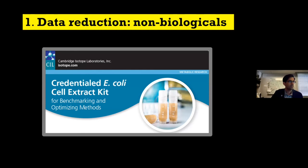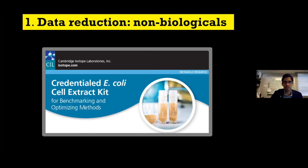Initially we did this in E. coli thinking any lab could repeat it, but as it turns out there are a lot of analytical labs that don't want to work with cells. We are very excited that Cambridge Isotopes decided to develop this as a product — these credentialed E. coli kits, which you can find on their website and Andrew mentioned earlier. In addition to enabling researchers not to grow the cells themselves, it adds benefits because these are stable, use the same protocol, and have rigorous quality control, adding reproducibility and rigor to the experiments.